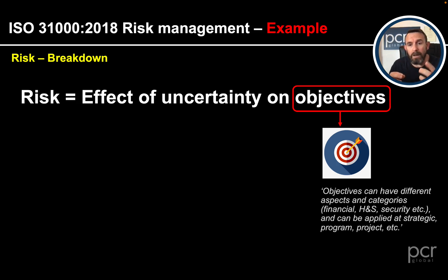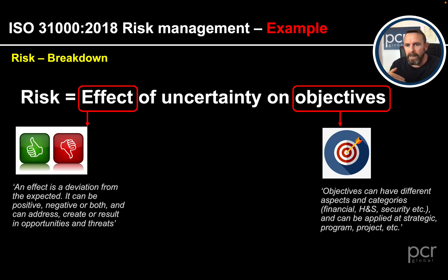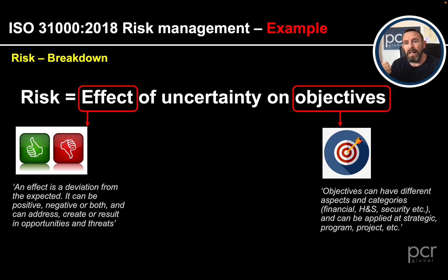Each of those objectives can be affected. The effect, according to ISO 31000, is a deviation from the expected - it can be positive, negative, or both, and can address, create, or result in opportunities and threats. There is an upside to risk. If we exploit or take advantage, this is opportunity management. So risk in ISO 31000 covers both opportunity management and threat management.